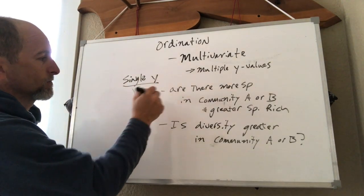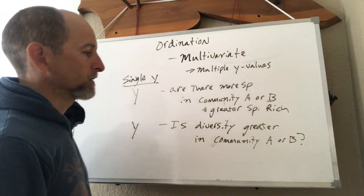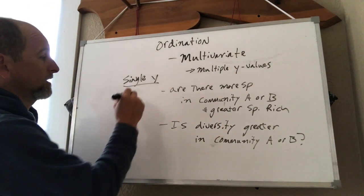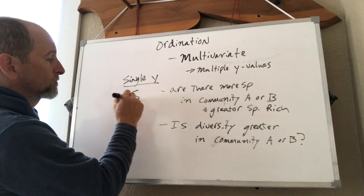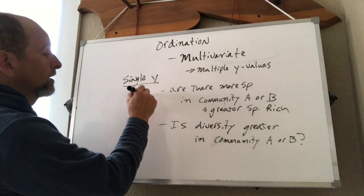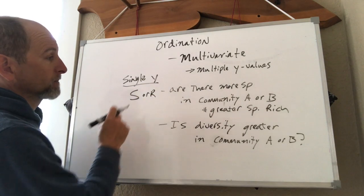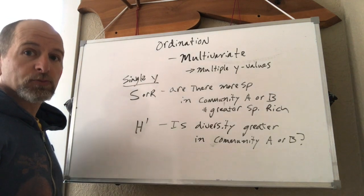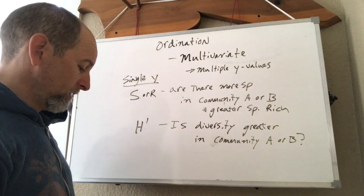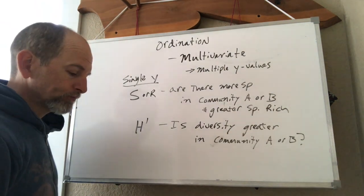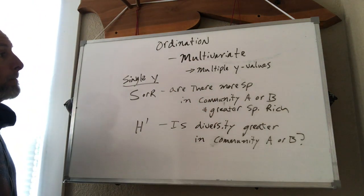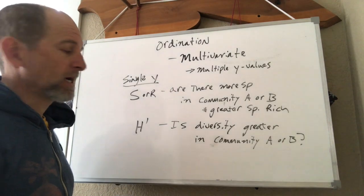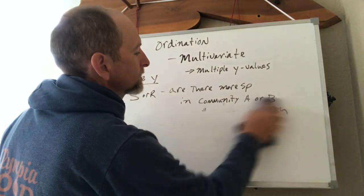So in this case, this might be richness. In this case, this might be diversity. And we would actually reflect those with measures of richness, sometimes represented by S or R, probably more commonly by S for species richness. And for diversity, we might use something like Shannon's H prime, which you've covered before. But both of these are taking an index from the entire community, but they don't tell us everything.